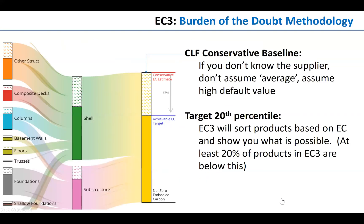A key strategy for addressing uncertainty and comparability in the EC3 tool is applying the burden of the doubt methodology. Most LCA practice currently uses the benefit of the doubt — if we don't know much about the material, we assume that industry average data is used, which is not conservative. Instead, the EC3 tool evaluates products using a burden of the doubt approach, estimating a high baseline by which values are assessed.